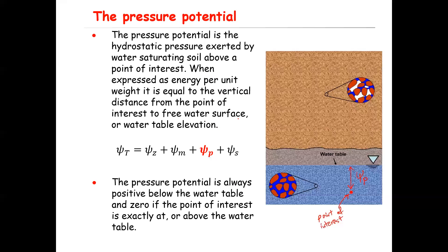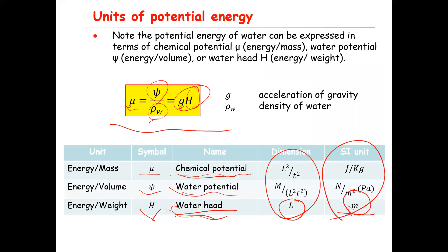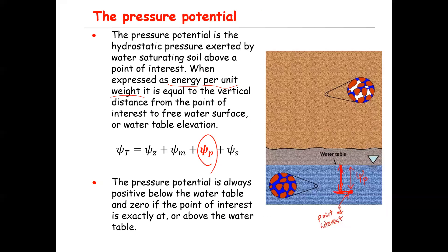The second component is pressure potential psi p, which is essentially the hydrostatic pressure exerted by water saturating the soil above a point of interest. For example, if this is your water table and this is your point of interest, the vertical distance between the point of interest and the water table gives you the pressure potential when expressed in water head — that is, as energy per unit weight. The pressure potential at the water table and above it, in the unsaturated zone, is equal to zero, while below the water table it is a positive value.